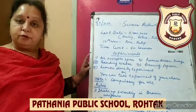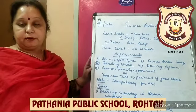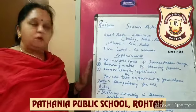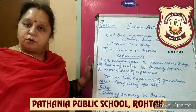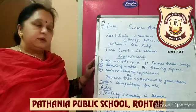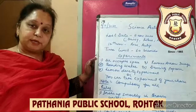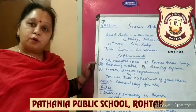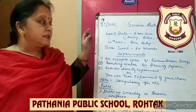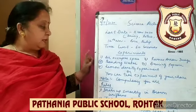In this video I will tell you only the names of the experiments. In the next video I will perform all the experiments and show you how to perform them. The names of the experiments are: Air Occupies Space, Bending Water, Lemon Density Experiment, Reverse Arrow Image, and Dancing Popcorn.